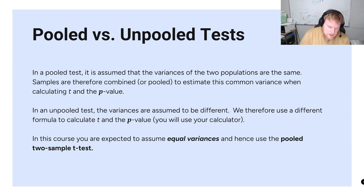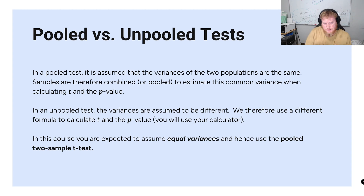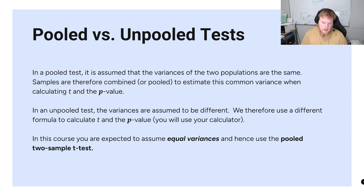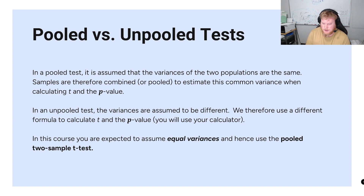Pooled versus unpooled tests — most of this is informational. A pooled test assumes the variance of the two populations to be the same, meaning we don't have to worry about differences in the variances of the populations from which we're pulling samples.